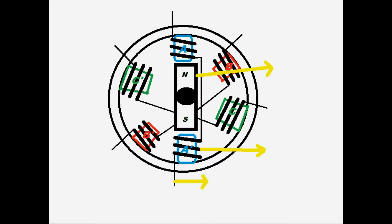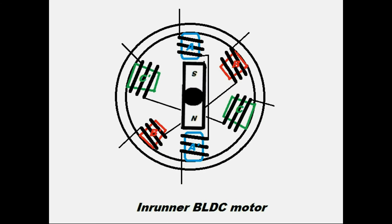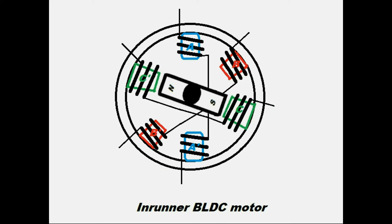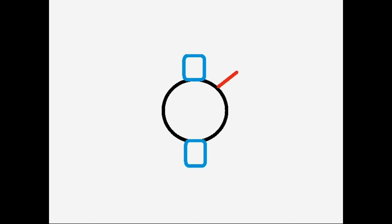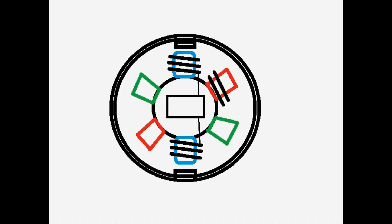The rotor may be an in-runner or out-runner, chosen according to application requirements. Each winding of the stator pole is connected to a microcontroller, and the magnetic flux in the stator pole can be controlled via hardware and software. More precise speed and control can be obtained by increasing the number of stator poles.